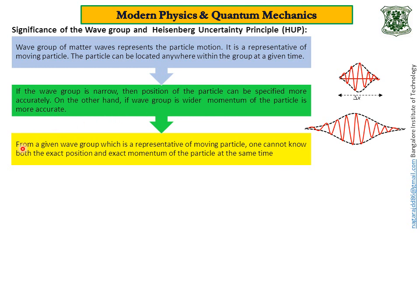Coming to the conclusion: from a given wave group, which is a representative of a moving particle, one cannot know both the exact position and the exact momentum of the particle at the same time. So the wave group signifies the particle, and from it we can measure both position and momentum, but for a given group if you try to measure both simultaneously there will be some errors in your measurement.